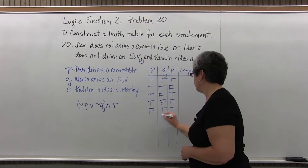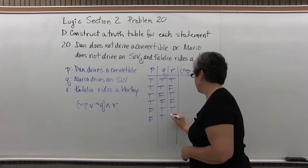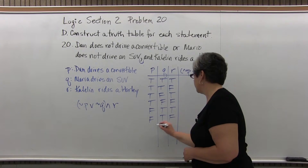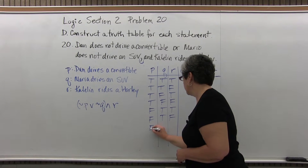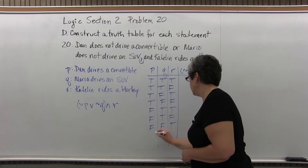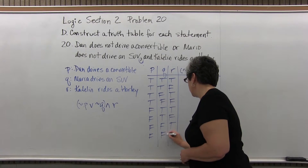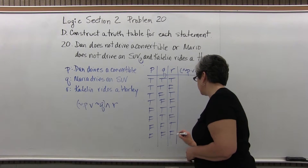Continuing the truth value rows: false, true, true; false, true, false; false, false, true; false, false, false.